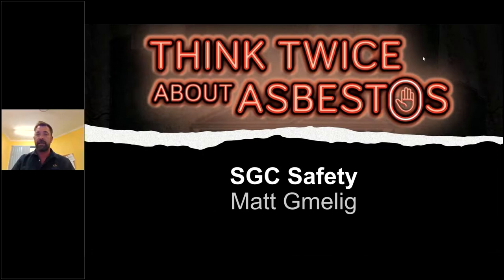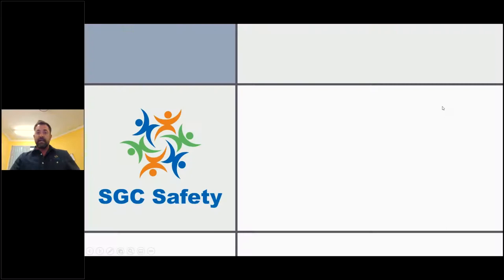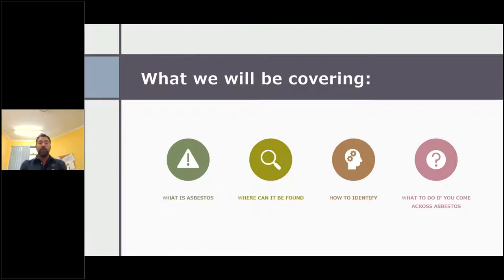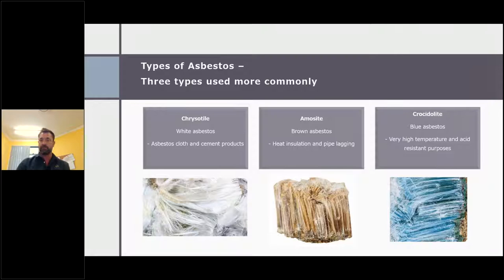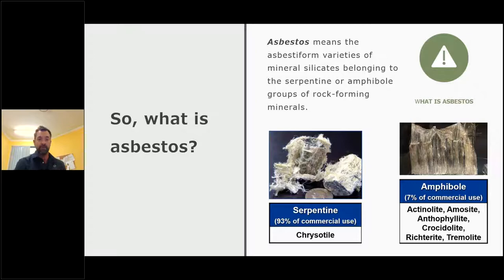Thank you very much Stephanie and good afternoon everybody. Today I'll be covering what is asbestos, where we can find it, how to identify it, and what to do if you come across asbestos. Asbestos is basically a naturally occurring mineral. Two types — serpentine and amphibole — are the two most common, with chrysotile being the most commonly used.